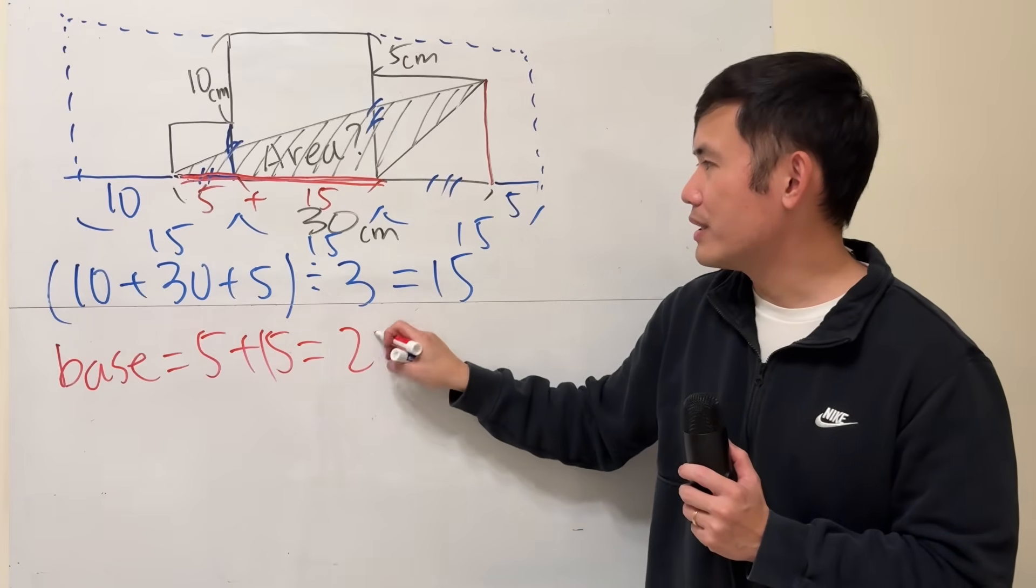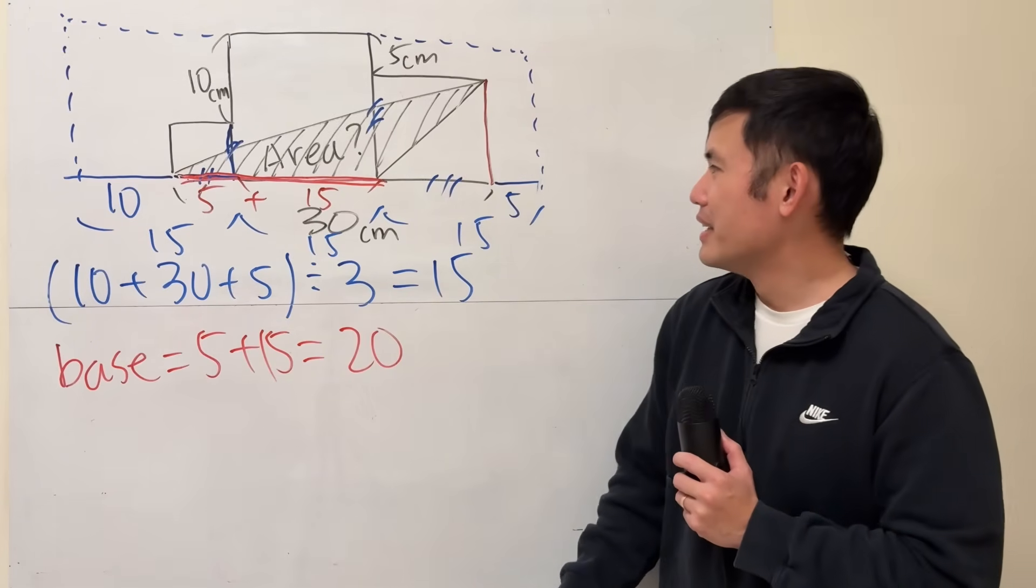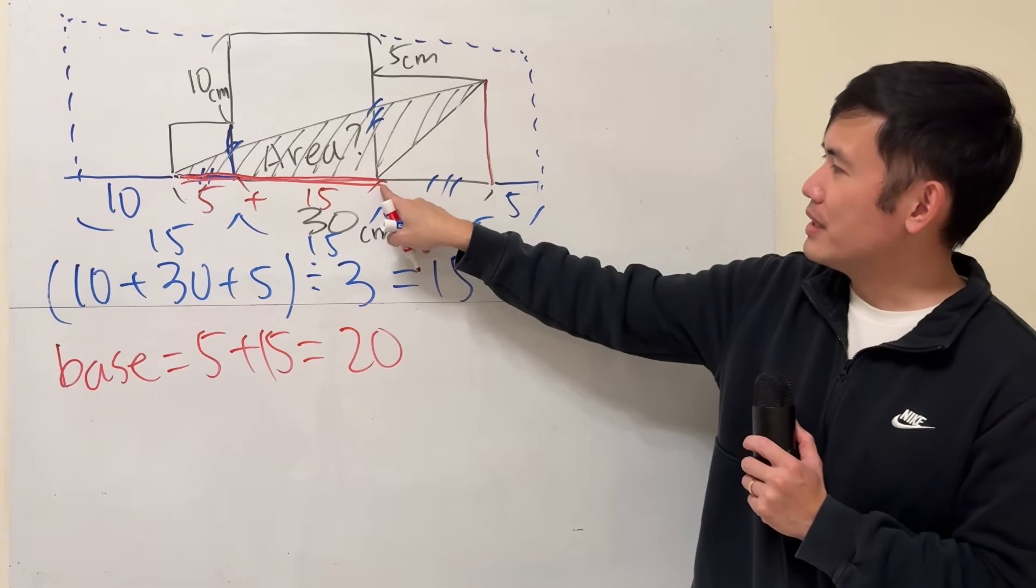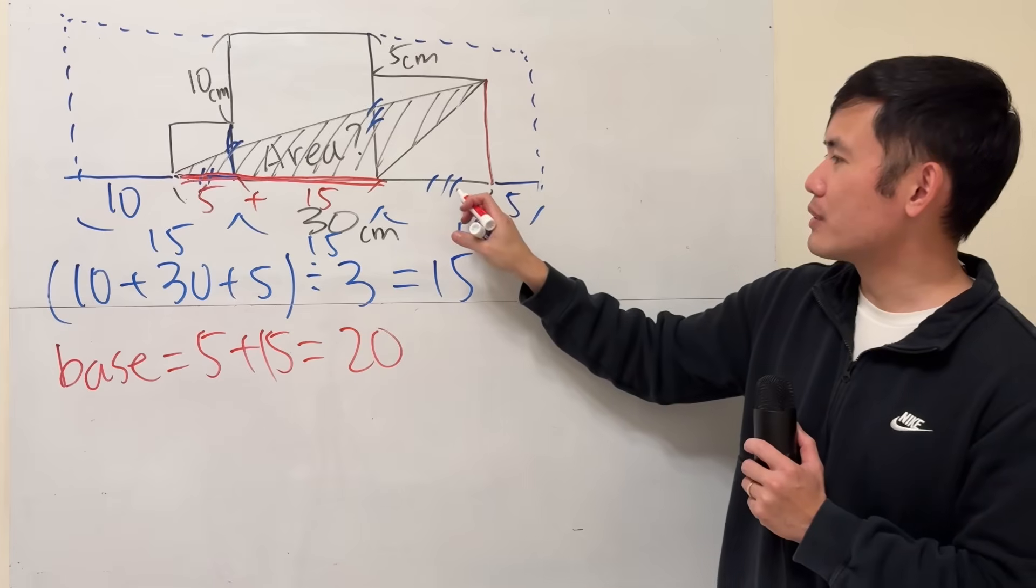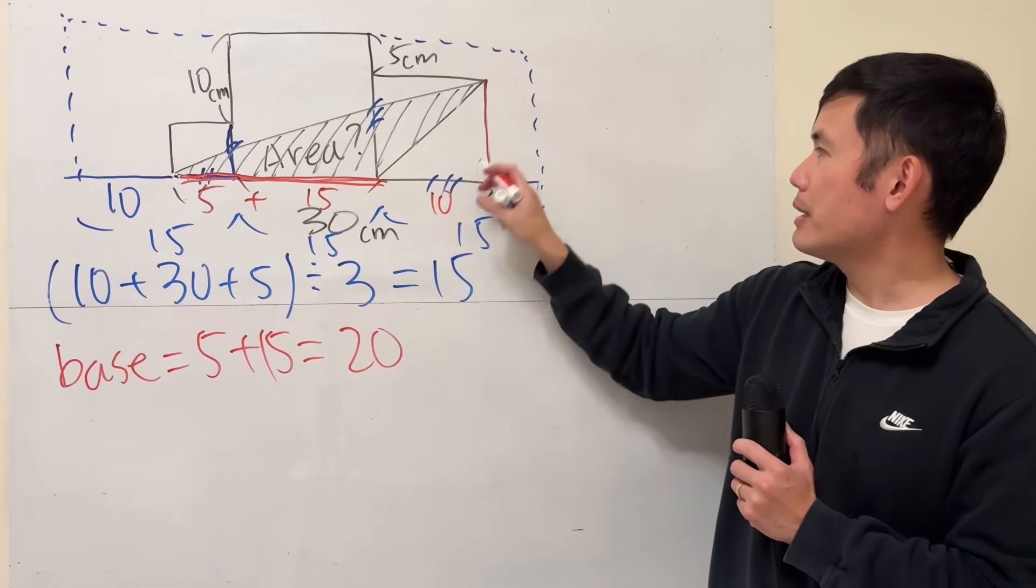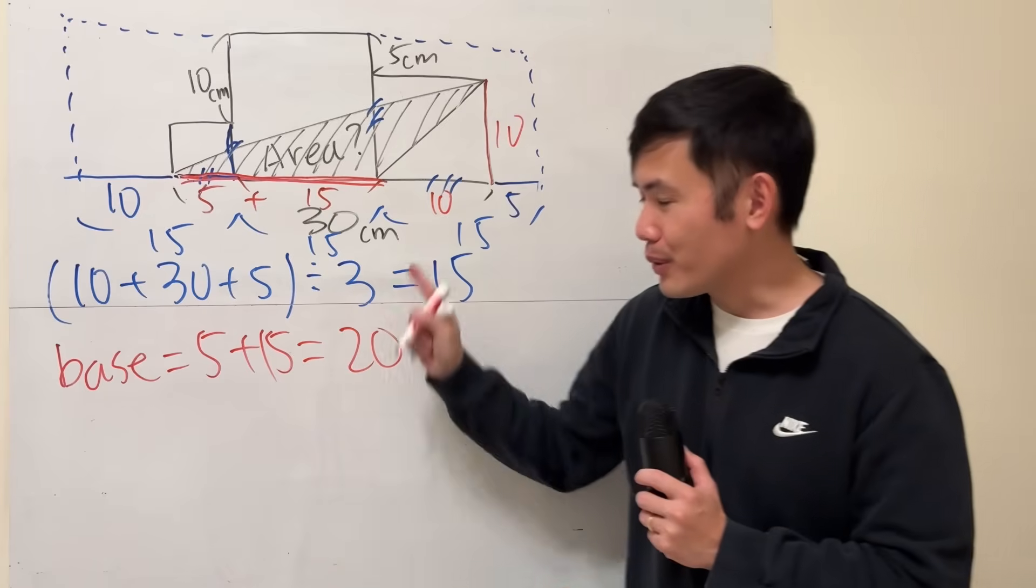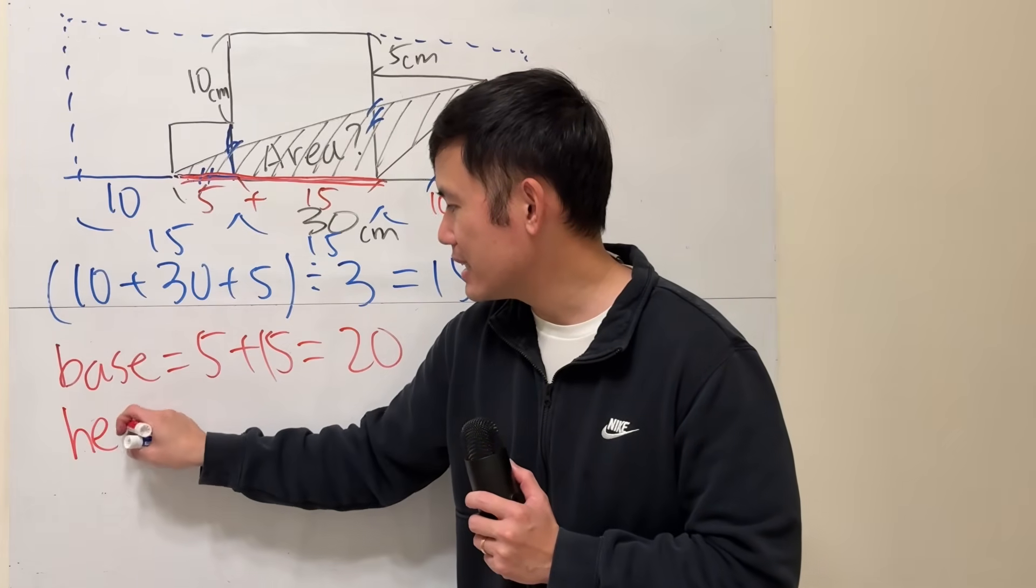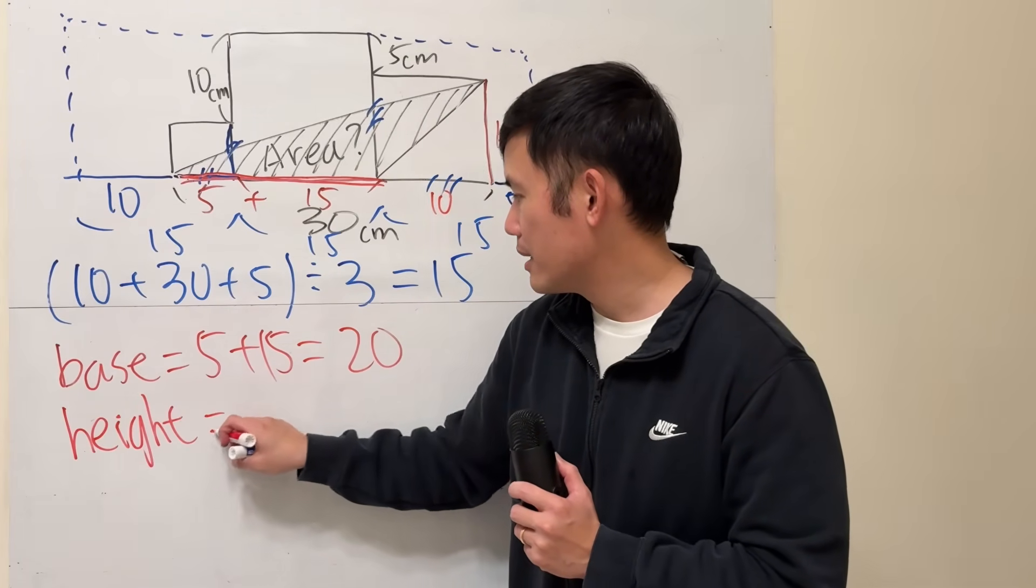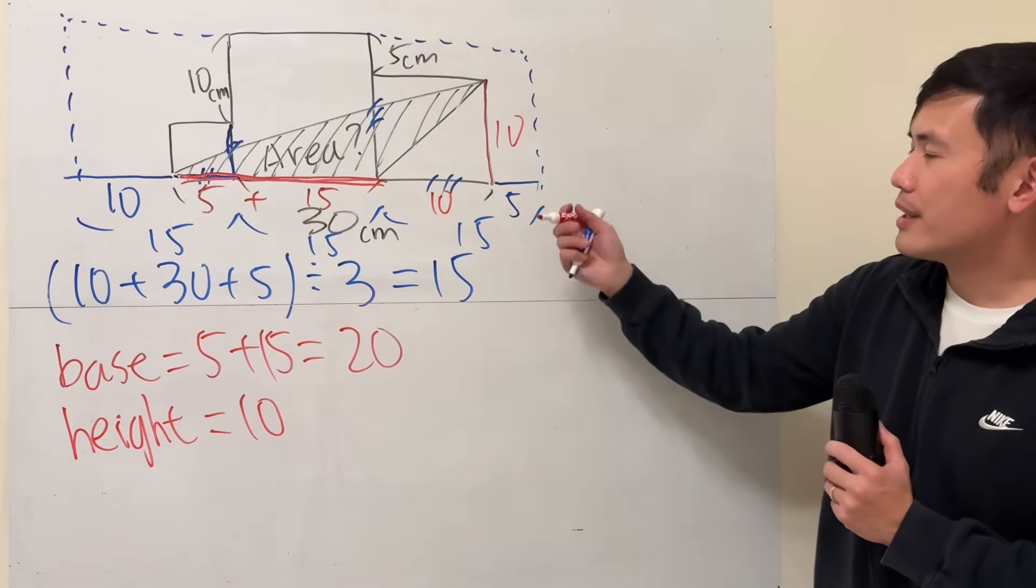For the triangle, now from here to here is 15, this is 5, so this right here will be 10. So that means this will also be 10, so the triangle has the height being 10.